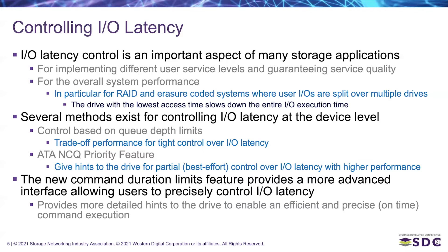There are mainly two methods that exist today for controlling IO latency at the device level. The first is based on QDepth limits — this is a trade-off of performance for tight control over IO latency. The other method, quite widely used today, relies on the NCQ priority feature. With this feature, a user can give hints to the drive to achieve a partial best-effort control over IO latency with higher performance.